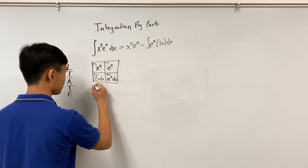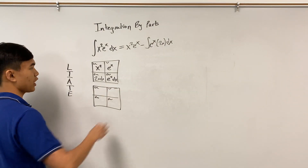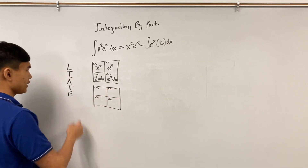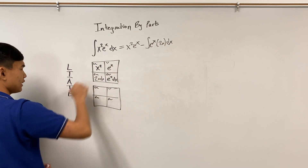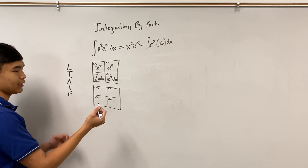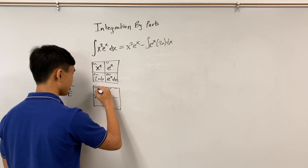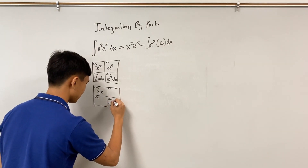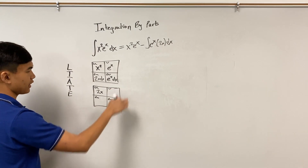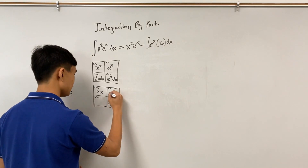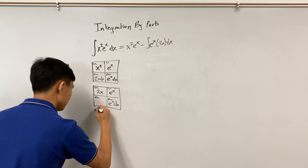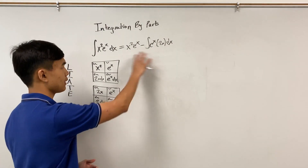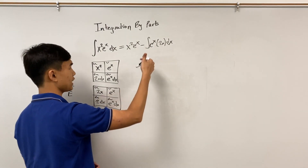Setting up the second table, 2x is algebraic and eˣ is exponential. Since 2x ranks higher, let u equal 2x and dv equal eˣ dx. We already know the integral of eˣ dx is eˣ. Differentiating u gives du equals 2 dx.